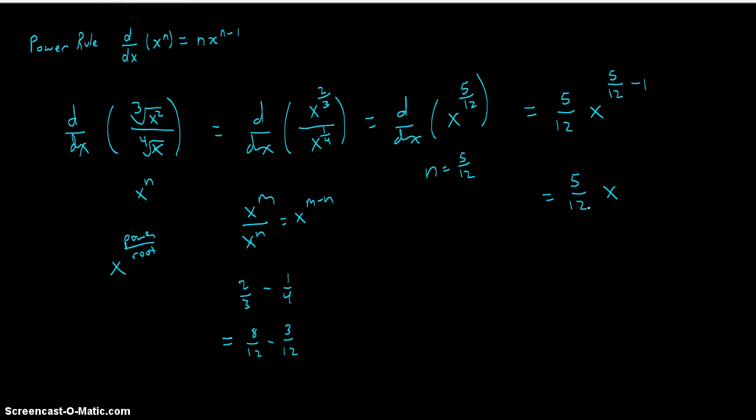5 twelfths minus 12 twelfths is negative 7 twelfths. And writing that back in radical form, our coefficient is 5 twelfths. The negative exponent here, negative 7 twelfths, makes it so we put this 1 over x to the 7 twelfths.